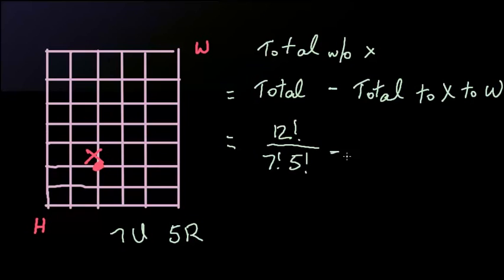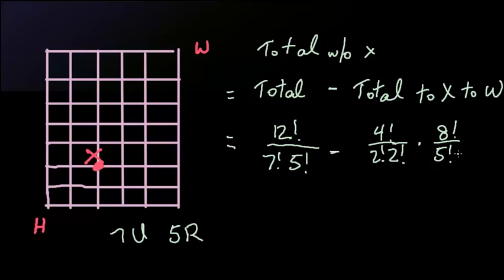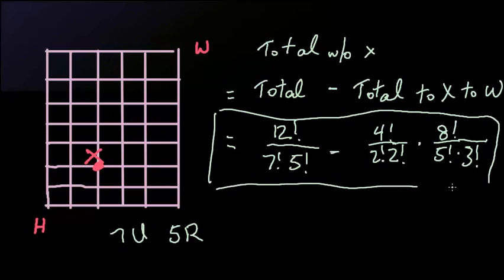How many ways are there to go from H to X? There are 2 ups and 2 rights, so that's 4 factorial divided by 2 factorial divided by 2 factorial. For each way we arrive at X, how many ways are there to go from X to W? There are 5 rights and 3 ups, so that's 8 factorial divided by 5 factorial divided by 3 factorial. Since there are 4 factorial divided by 2 factorial divided by 2 factorial ways from H to X, and 8 factorial divided by 5 factorial divided by 3 factorial ways from X to W, the number of paths through X is the product of both. The total number of valid ways from H to W equals 12!/(7!·5!) minus [4!/(2!·2!)] × [8!/(5!·3!)]. You can use your calculator to calculate this. Thank you for watching.